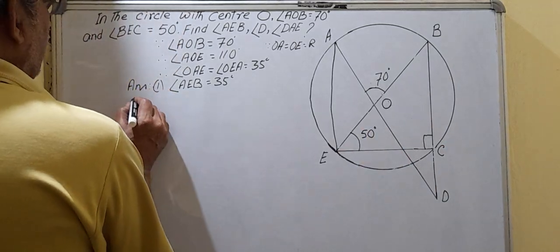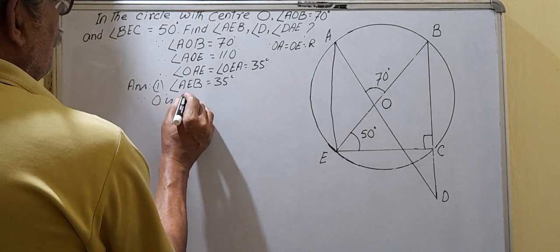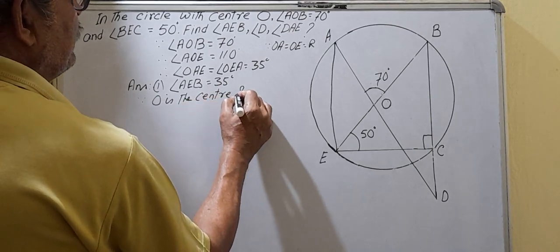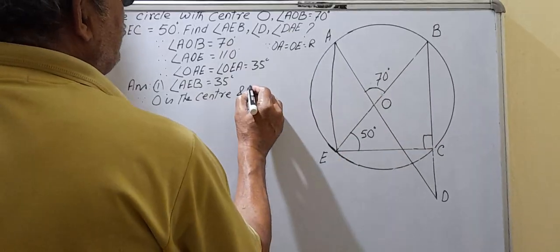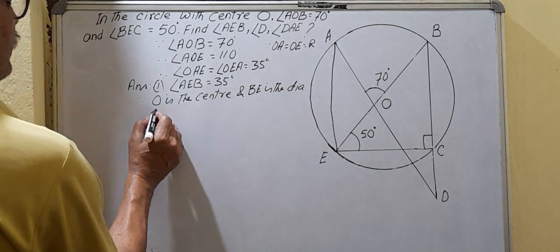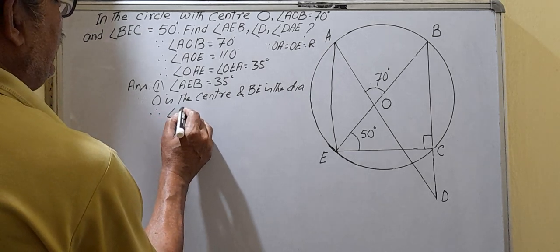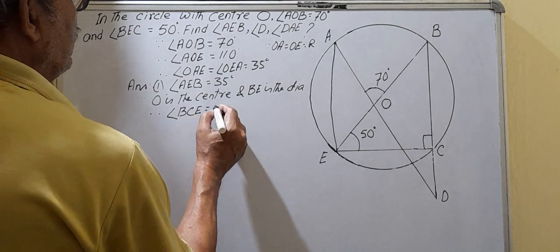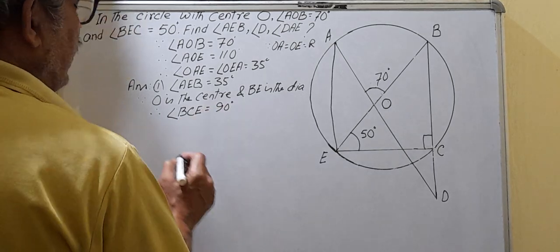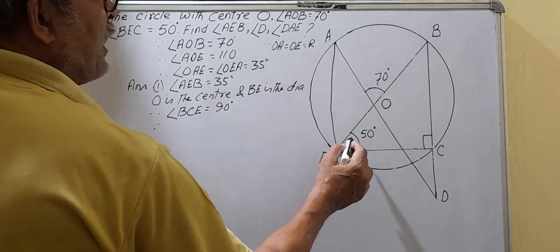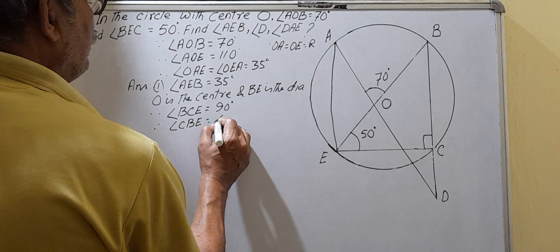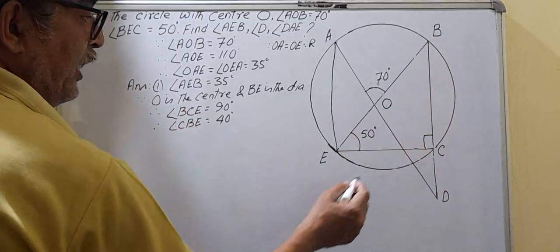Since O is the center and BE is the diameter, therefore angle BCE = 90 degrees. Now in triangle BCE, therefore angle CBE = 40 degrees.